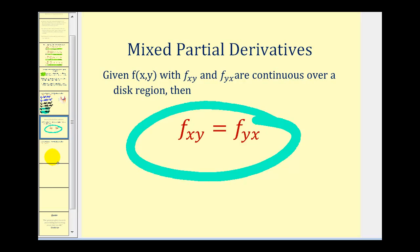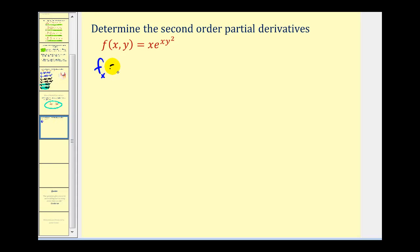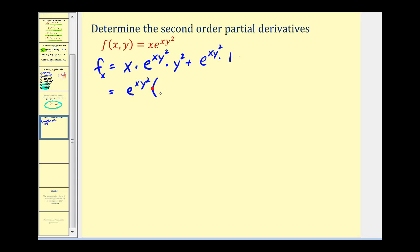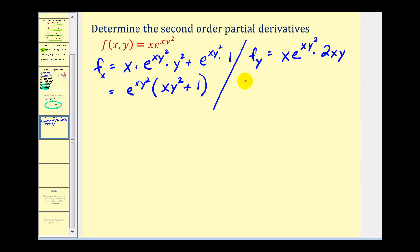Let's take a look at one more example that's a little bit more involved. We'll start by determining our first order partial derivatives. The first partial with respect to x requires the product rule, giving us x times e to the xy squared times y squared, plus e to the xy squared times one. Factoring out the exponential, we're left with e to the xy squared times (xy squared plus 1). The first partial with respect to y, treating x as a constant, gives us x e to the xy squared times 2xy, which simplifies to 2x squared y e to the xy squared.